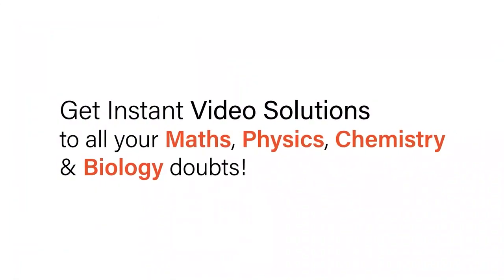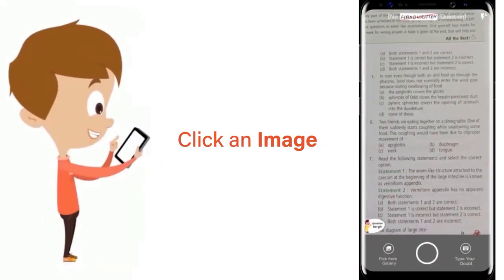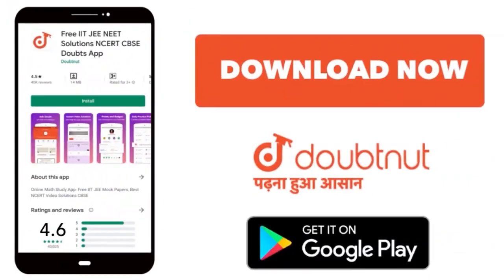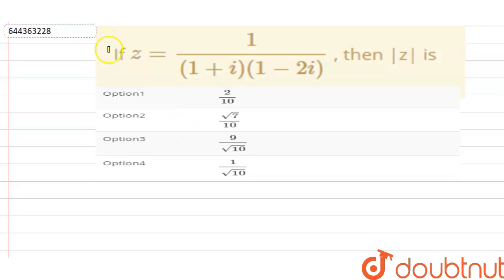With Doubtnet, get instant video solutions to all your maths, physics, chemistry and biology doubts. Just click the image of the question, crop the question, and get instant video solution. Download Doubtnet app today. Hello everyone, so our question is if z is equal to this, then find mod z. We have four options given and we need to tell which option is correct.